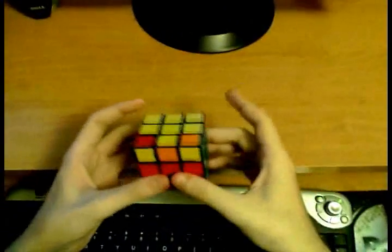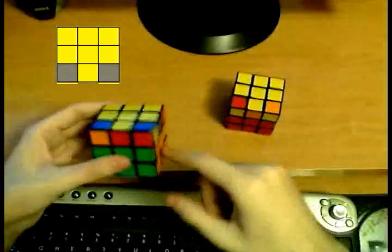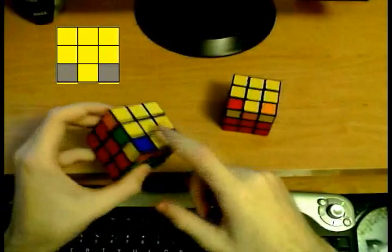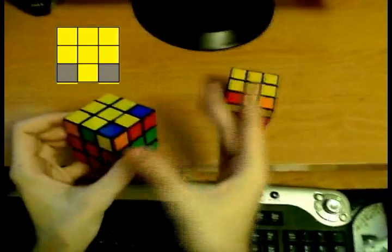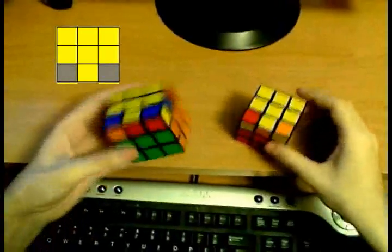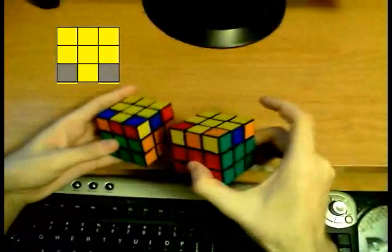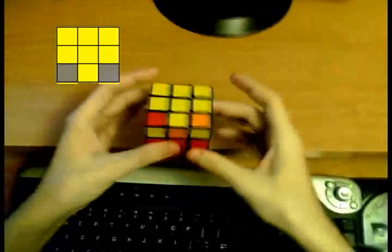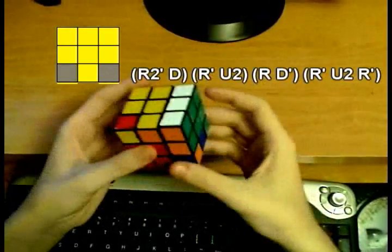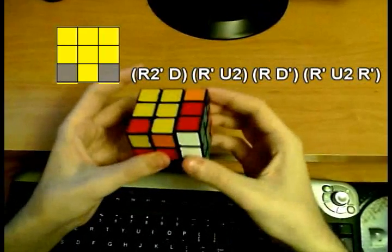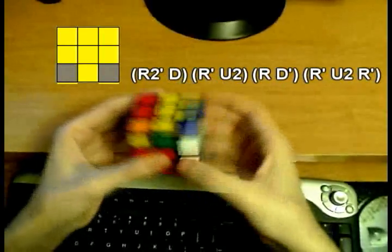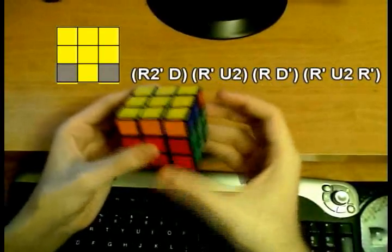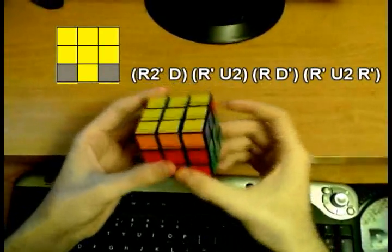Okay, there are only three algorithms left. This case is called headlights, and this case looks very similar to another case which is called chameleon, because it's got eyes on the sides, I suppose. They look similar but they're not similar, so be careful. To solve the headlights, hold the cube like so and do R2 D R' U2 R D' R' U2 R'. I cannot think of any easy way to remember this case—you'll just have to learn it.